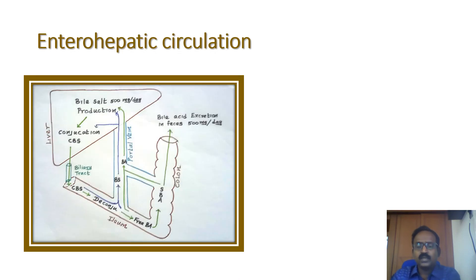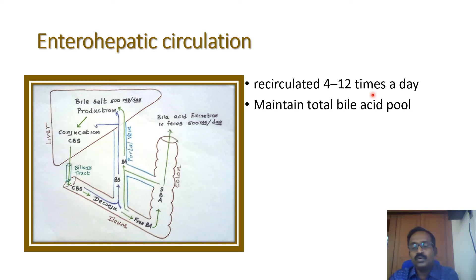Enterohepatic circulation occurs 4 to 12 times per day for digestion of food. Each digestion, it occurs 3 to 4 times, for a total of 4 to 12 times for maintaining the bile acid pool around 2 to 4 grams per deciliter.